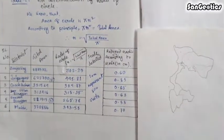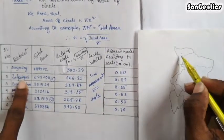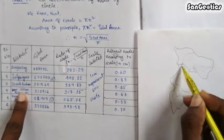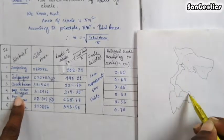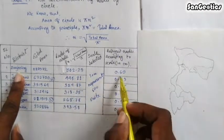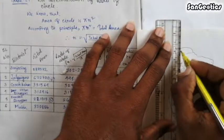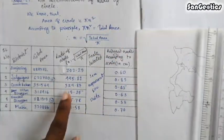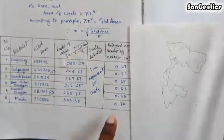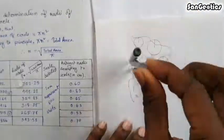After calculation, we draw the pi diagram or sectoral diagram for each district: Darjeeling, Jalpaiguri, Coochbehar, Uttar Dinajpur, Dakshin Dinajpur, and Malda. The reduced radius of Darjeeling is 0.60 cm, so we draw a 0.60 cm line on the map. Similarly, draw lines for the remaining districts based on their reduced radius using the graphical scale, then draw a circle with the help of a compass.